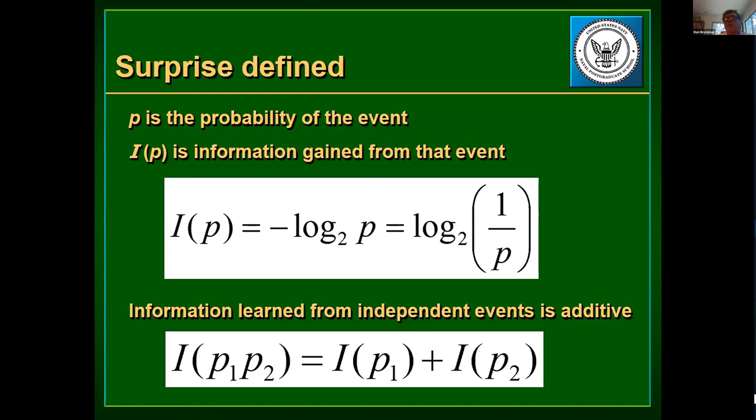It's fun watching Hamming describe that. I had the benefit, when I first heard him talking about this, to be in another course by Dr. Hamming — probability and statistics for computer science students. That means they didn't trust us to take the full-strength mathematics department course. We got the version where probability and statistics were smashed together, and they tried to jam a whole bunch into one quarter.